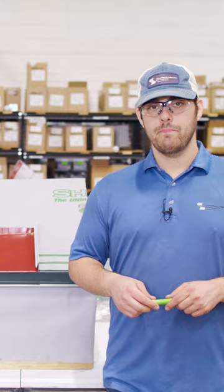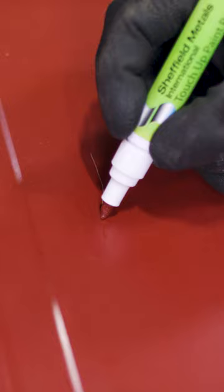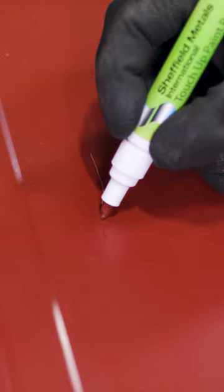Make sure the area you're applying it to is clean and dry. Apply the paint lightly to the metal and wipe off the excess with a soft cloth if needed. You can repeat the process if you need more color and then allow it to dry and set.